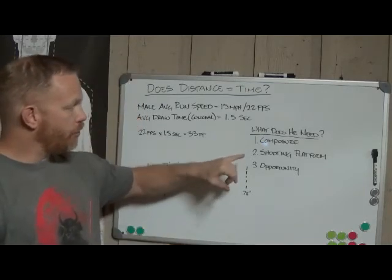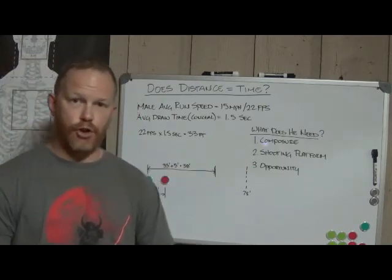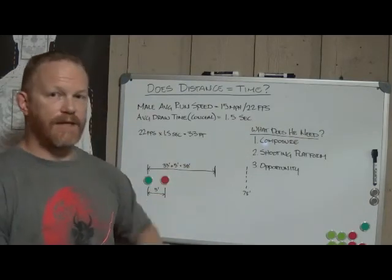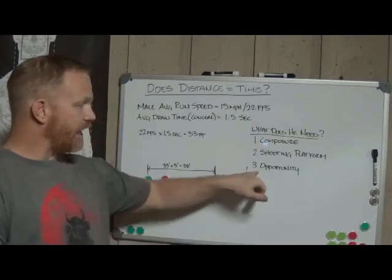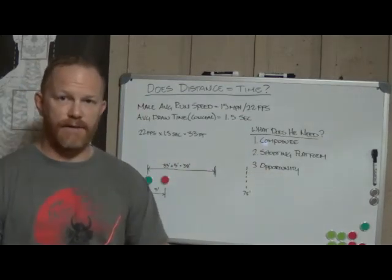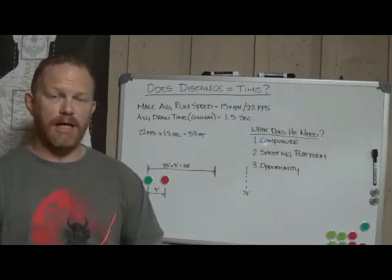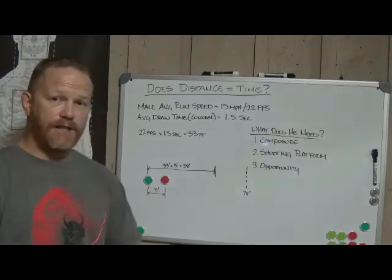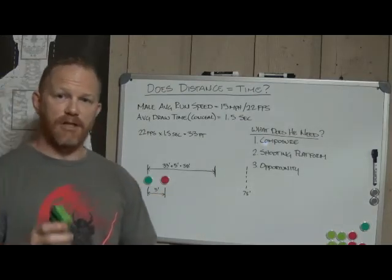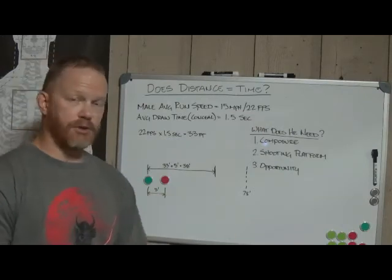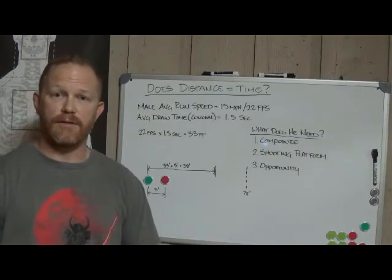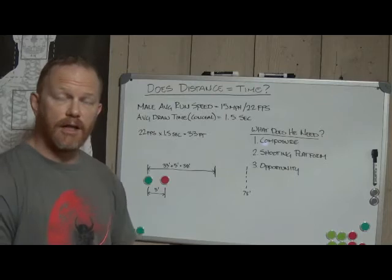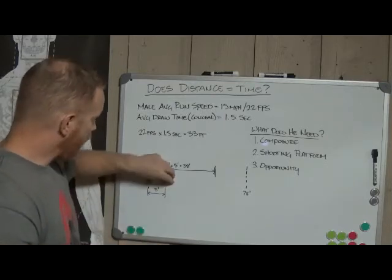So if he needs composure, shooting platform, and opportunity to be able to shoot me, and I am five feet away from him, can I effectively mitigate any of these things by running away? Can I take away opportunity by getting beyond the 75 feet? No, we've already done that mathematically. I can only make it about half the distance at a full sprint. So I'm five feet away. How long would it take me to cover that five feet at that 22 feet per second? Well, roughly a quarter second. So you take that five feet, 22 feet per second, comes out to a quarter second. So I can get in there and I can be within contact distance of this individual within a quarter second.